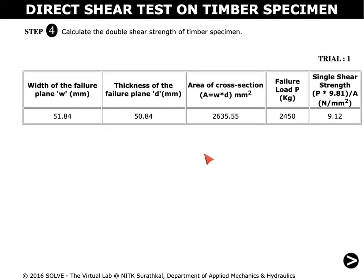The observation for trial 1 is shown here, and we can calculate the single shear strength by using the following formula. Similar steps are followed for trial 2 and trial 3.